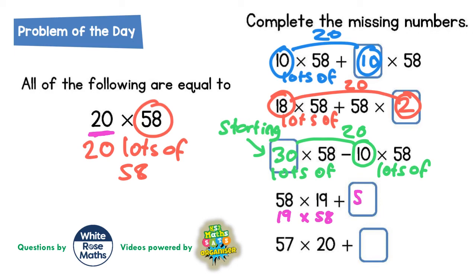So the missing number here is 58, in other words one lot of 58. So think about that one again: 19 lots of 58 plus one lot of 58, which is 58, would give you 20 lots of 58, and that's what we're looking for.